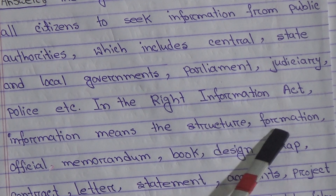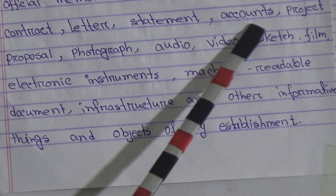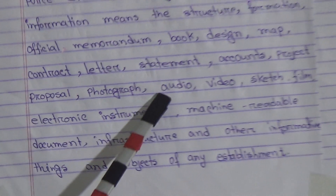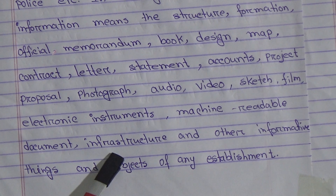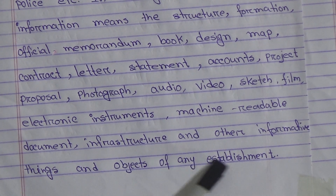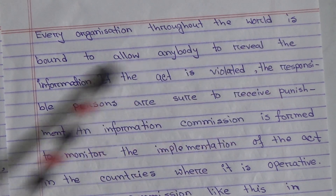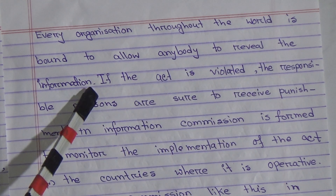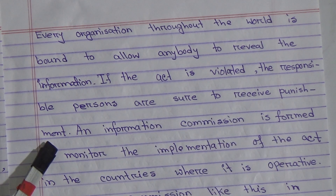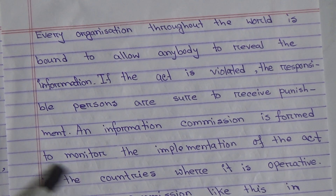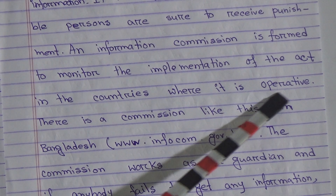In the Right to Information Act, information means the structure, formation, official memorandum, book, design, map, contract, letter, statement, accounts, project proposal, photograph, audio, video, electronic instruments, machine-readable documents, infrastructure, and other informative things and objects of any establishment. Every organization throughout the world is bound to allow anybody to access and reveal the information.